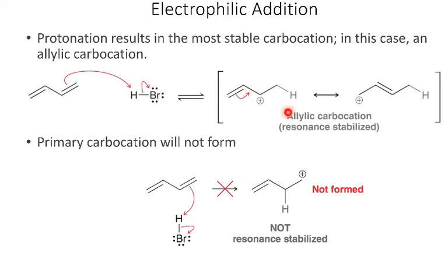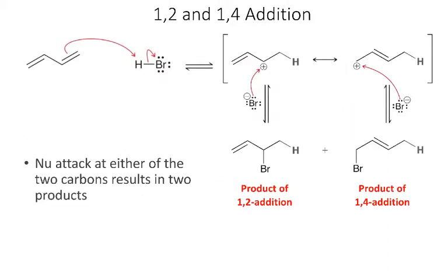The reason we get two products is because both resonance structures contribute to the carbocation intermediate. When the nucleophile comes in, it can either attack at this position or at this position, and that's why the bromine ends up in two different positions, giving us two different products.